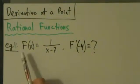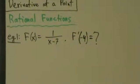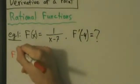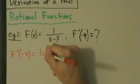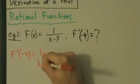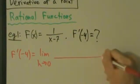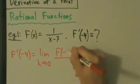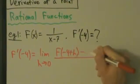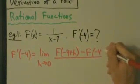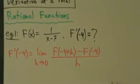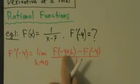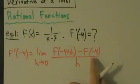We're going to find the derivative of this function at negative 4. Using the definition, that's going to be f prime of negative 4 equals the limit as h goes to 0 of f of negative 4 plus h, minus f of negative 4, all divided by h.